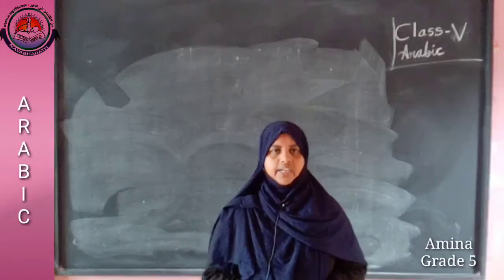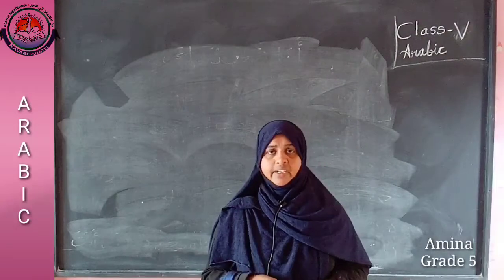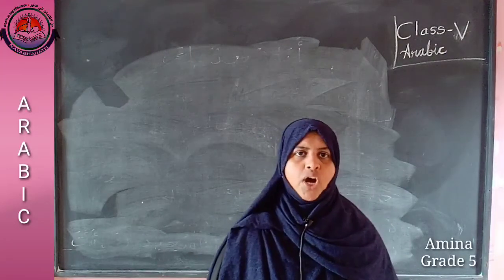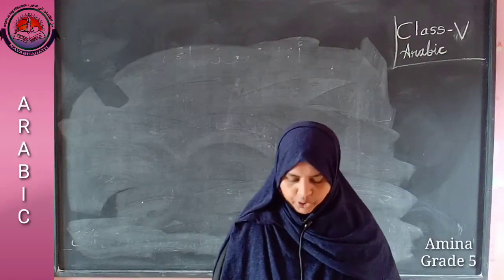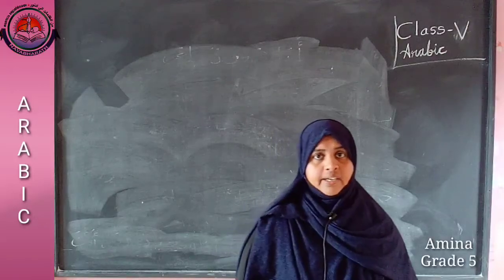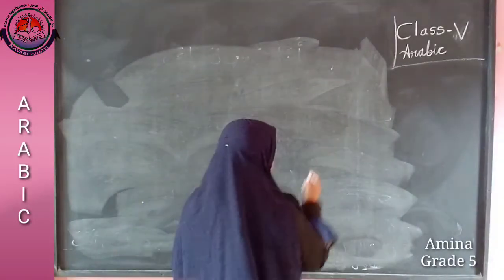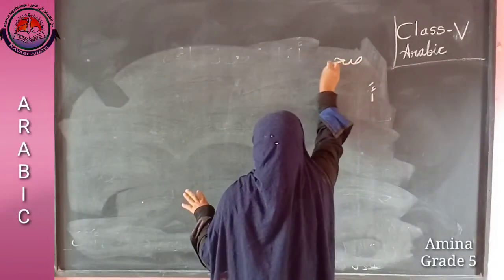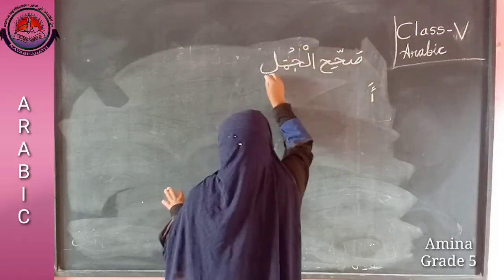Sahihul jumla - you have to tell true or false. First you have to identify if the sentence is true or false, then after that you have to correct the mistakes. Nusahihul jumla means correct the sentences. Kana hamidun sahibu ddukaan - Hamid was a shop owner. Is it correct? No. Kana hamidun sahibu ddukaan is wrong.